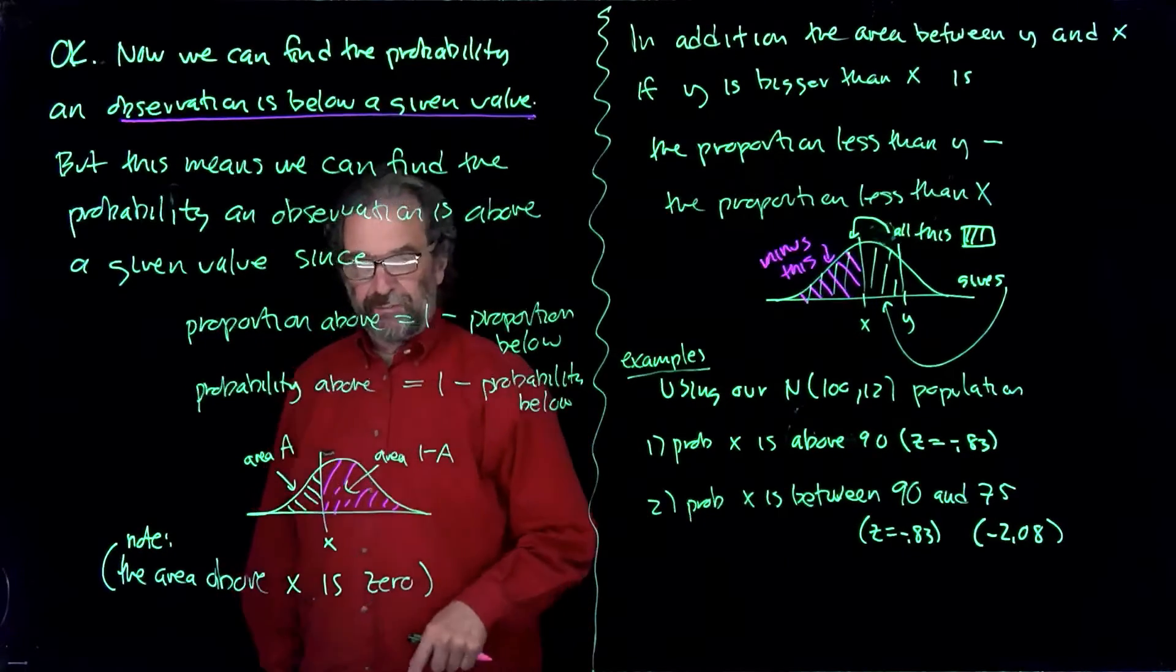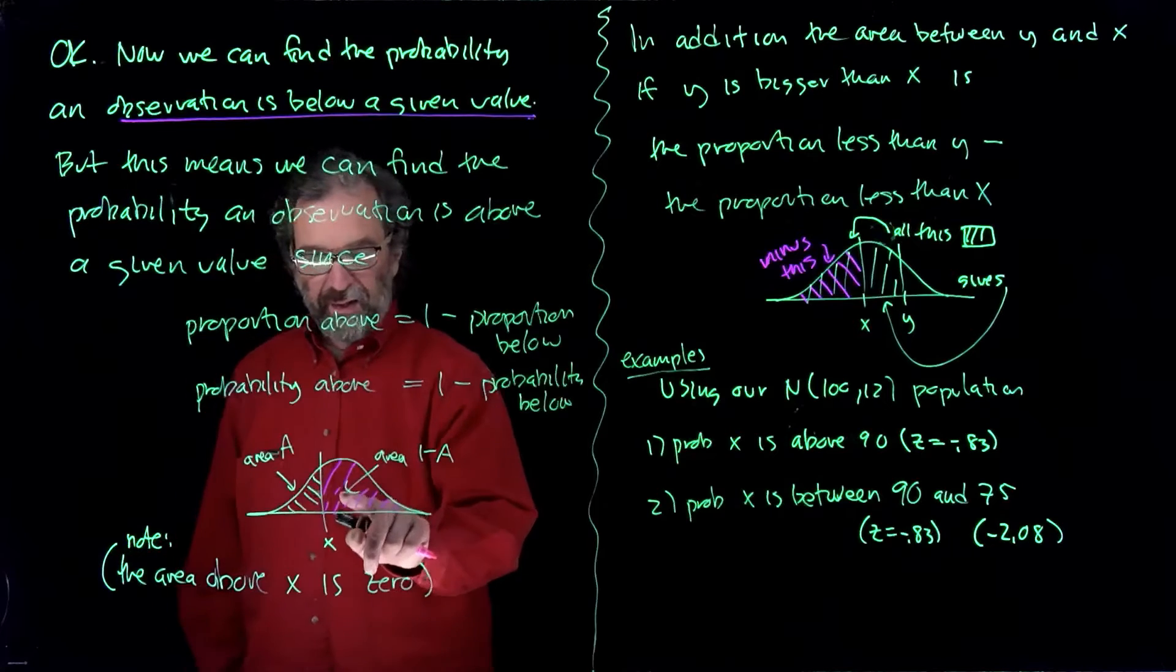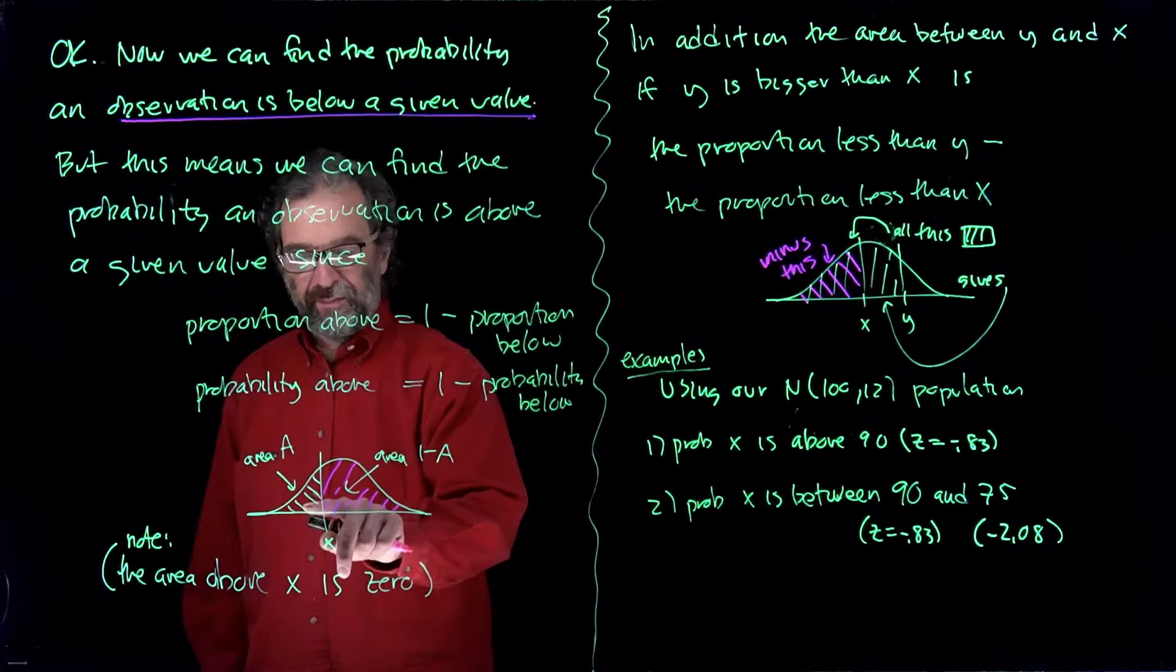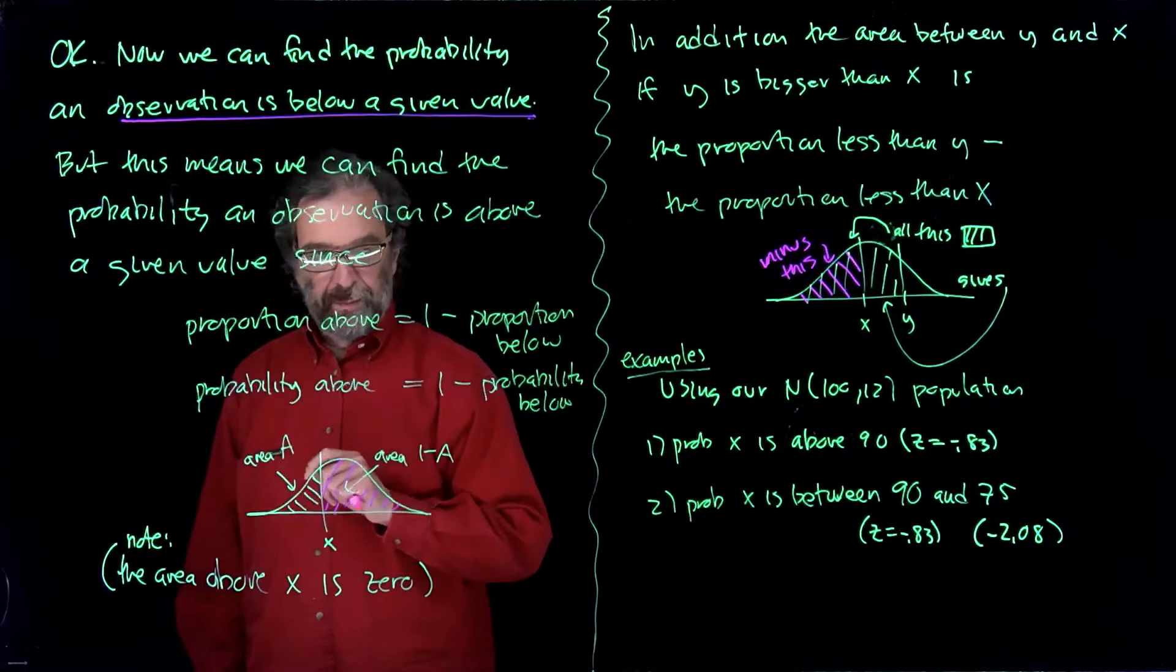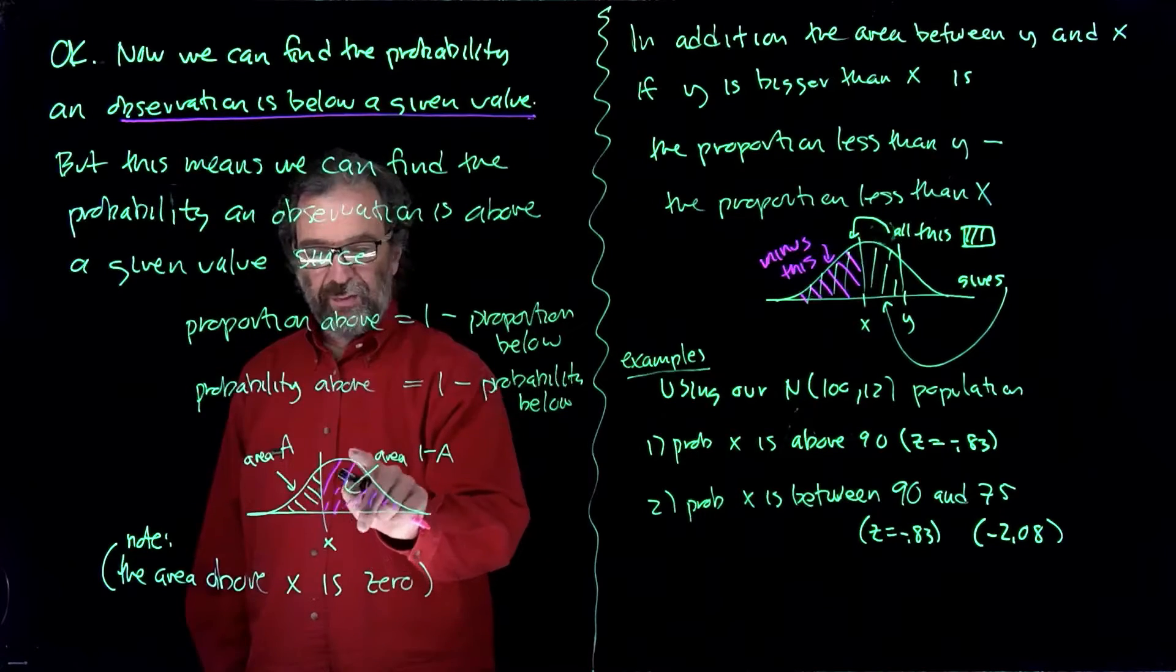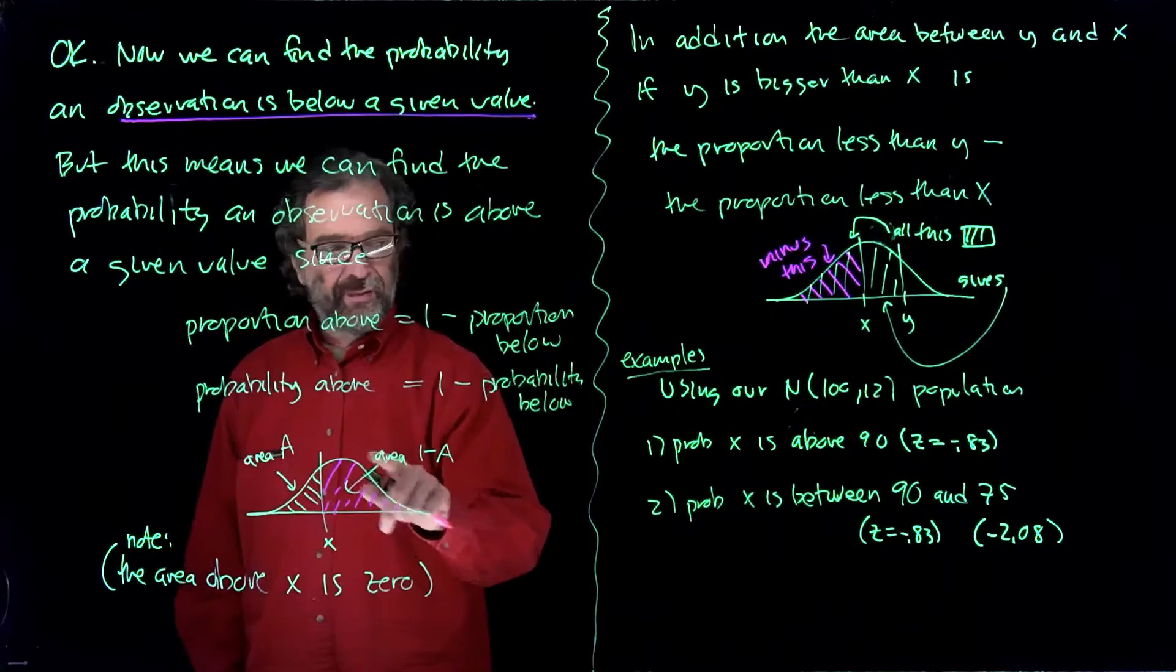In the picture, if I want the area here and I have the area down there, these two add to be one. So this area here is one minus that area there, so I'm going to do one minus.